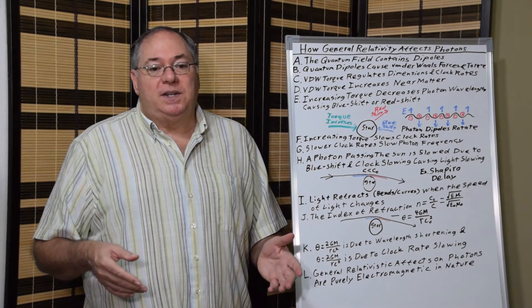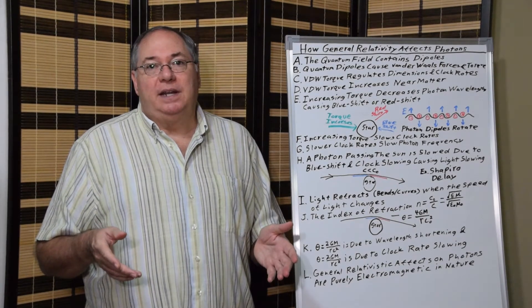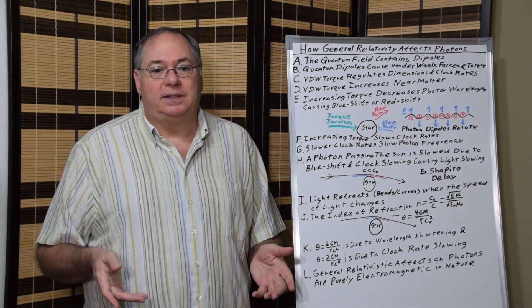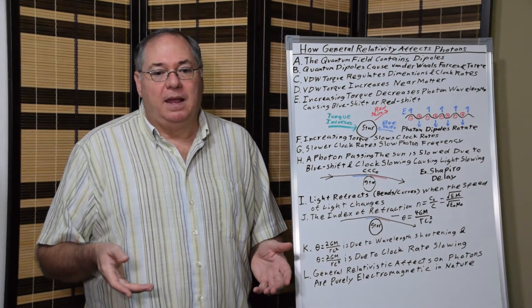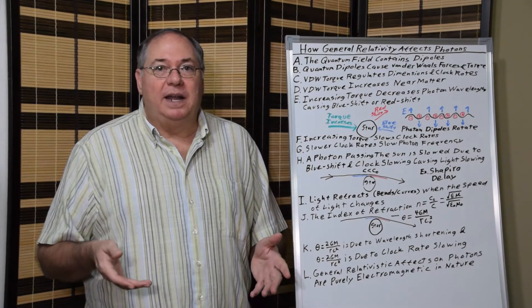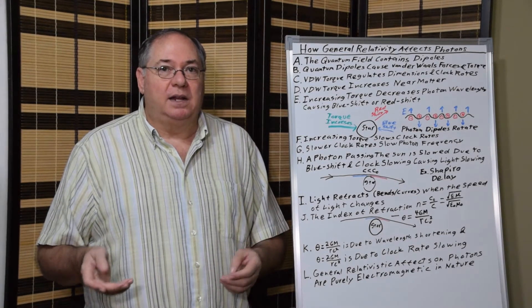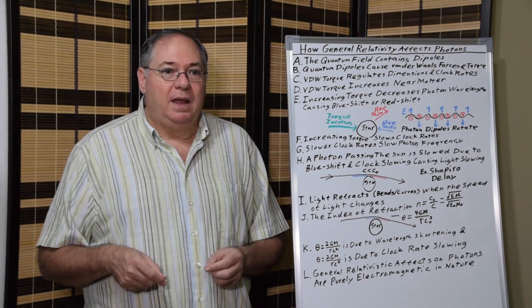This tells us that general relativity is a purely electromagnetic effect. And that relates to dimensions and clock rates. And that's all we need.